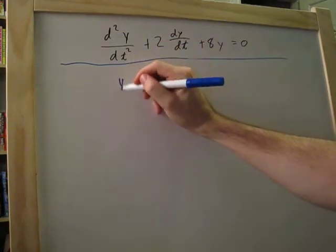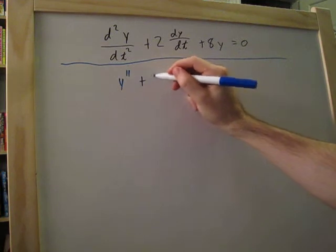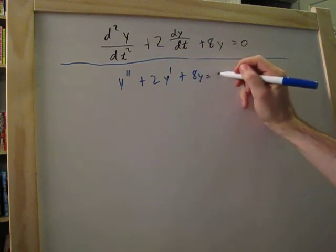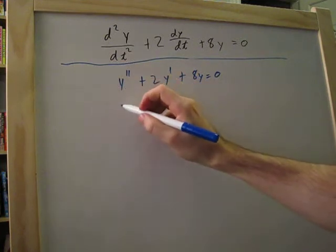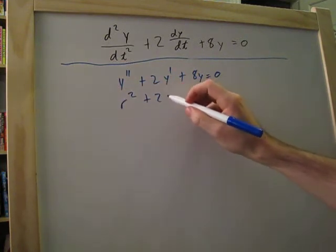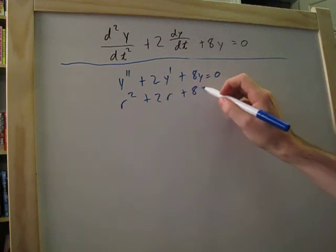So let's bring this down into y double prime plus 2y prime plus 8y is equal to 0. And then we'll bring this down to the characteristic equation, which will be r squared plus 2r plus 8 is equal to 0.